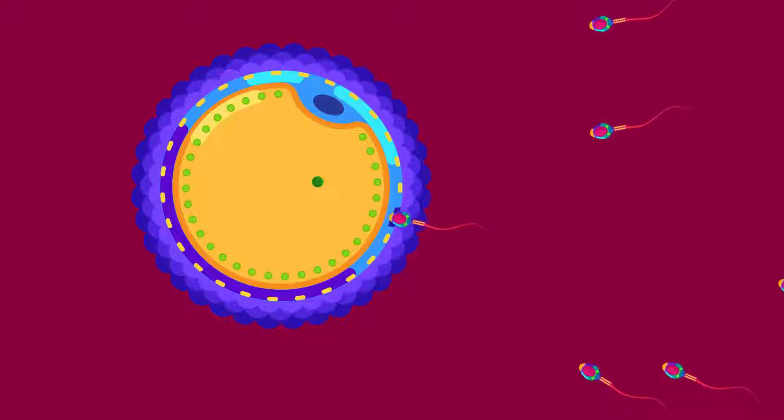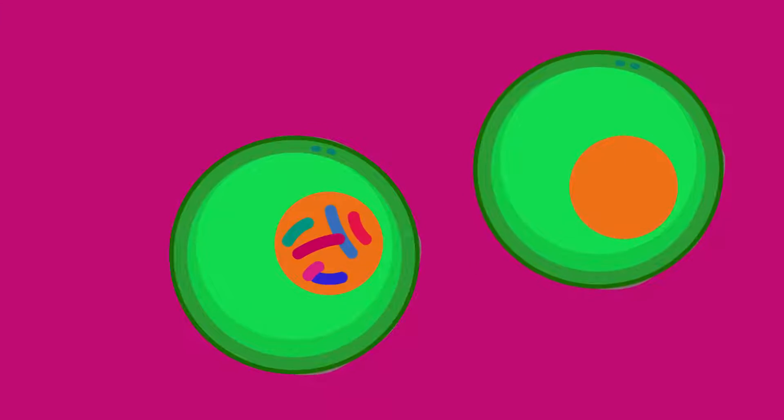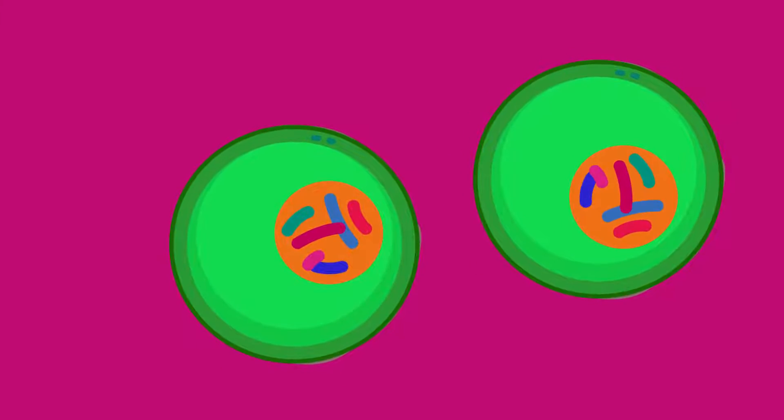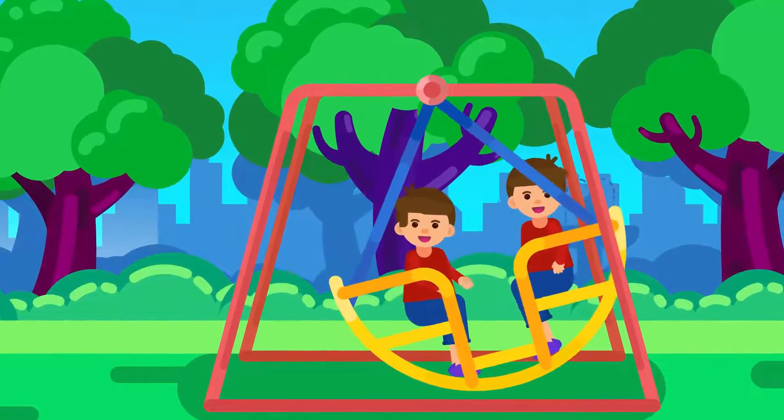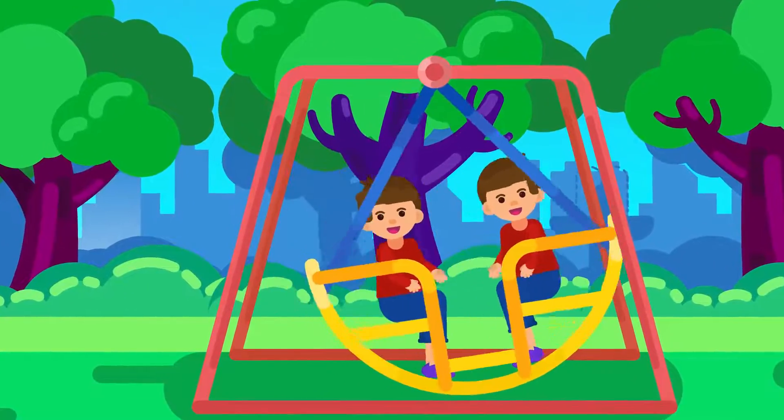Identical twins are produced by one fertilized egg. This egg, or zygote, divides into two cells, each of which develops into a baby. Since the two babies are derived from one fertilized egg, they have the same genes and are identical.